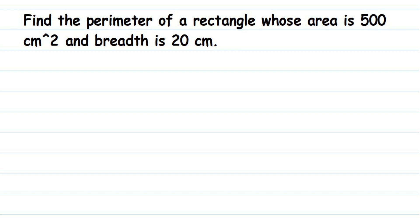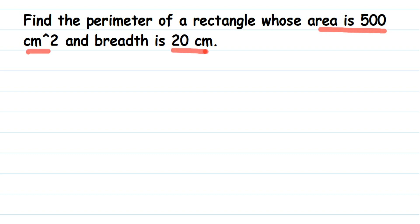Hello everyone. This is a question on the perimeter of a rectangle. The question is: find the perimeter of a rectangle whose area is 500 centimeter square and breadth is 20 centimeter. To find out the perimeter, we need to know both the length and breadth, but in the question we have only been given the breadth and not the length.